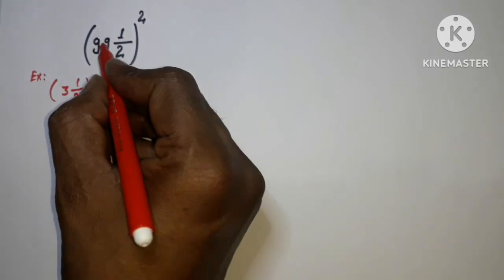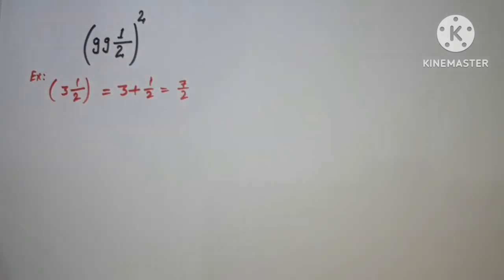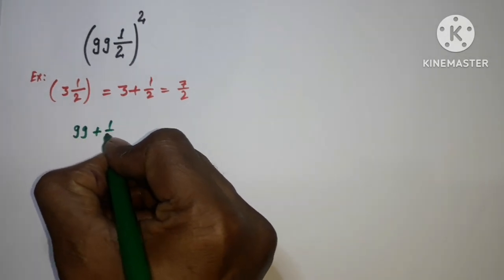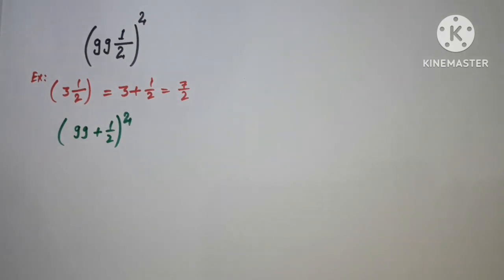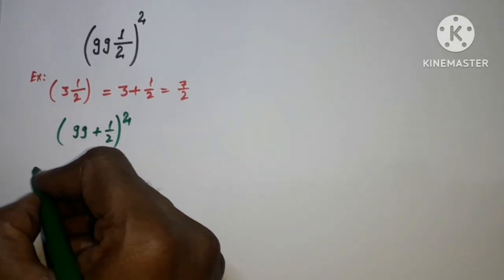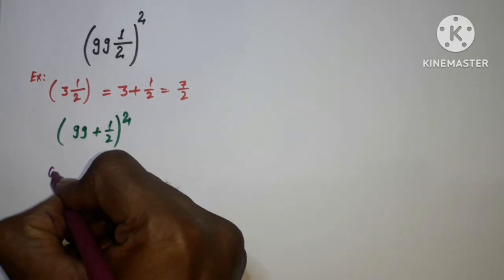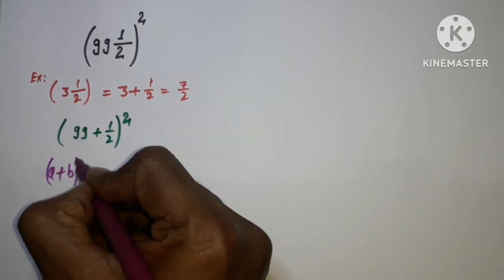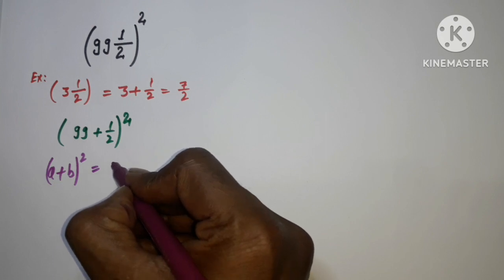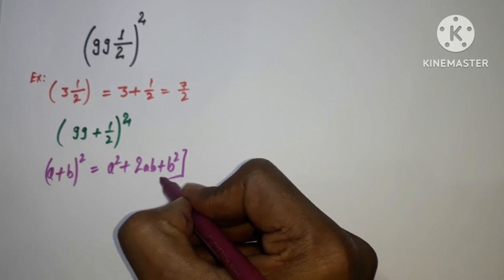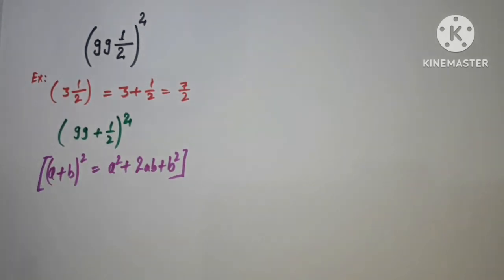Similarly, this can be written as (99 + 1/2)², and the power is 2. We know the formula for this: (a + b)² = a² + 2ab + b². This is a very famous formula and I'm using this identity here.